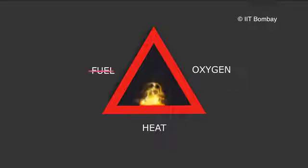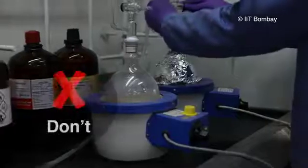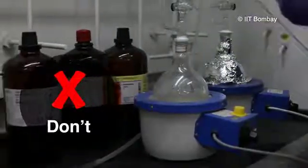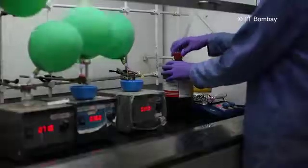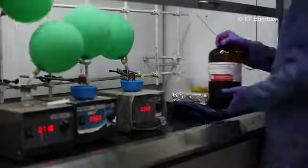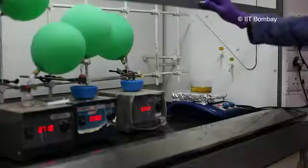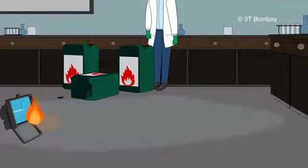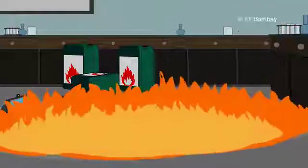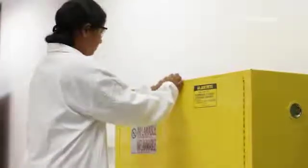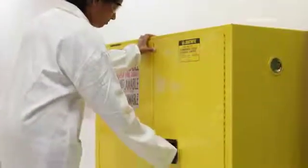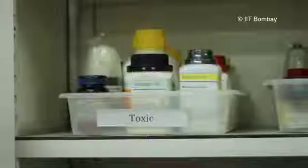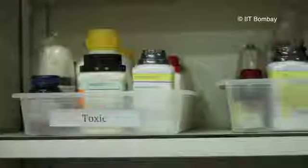We can prevent fires by ensuring that the elements of fire don't come together. Do not use fume hoods for storing flammable chemicals. Keep fume hoods clean. Keep flammable chemicals away from sources of ignition. Improper storage and handling of flammable solvents can cause a spill and a fire. Use safety cans and cabinets for storing flammable chemicals. Segregate chemicals on the basis of compatibility to prevent mixing of incompatible chemicals.